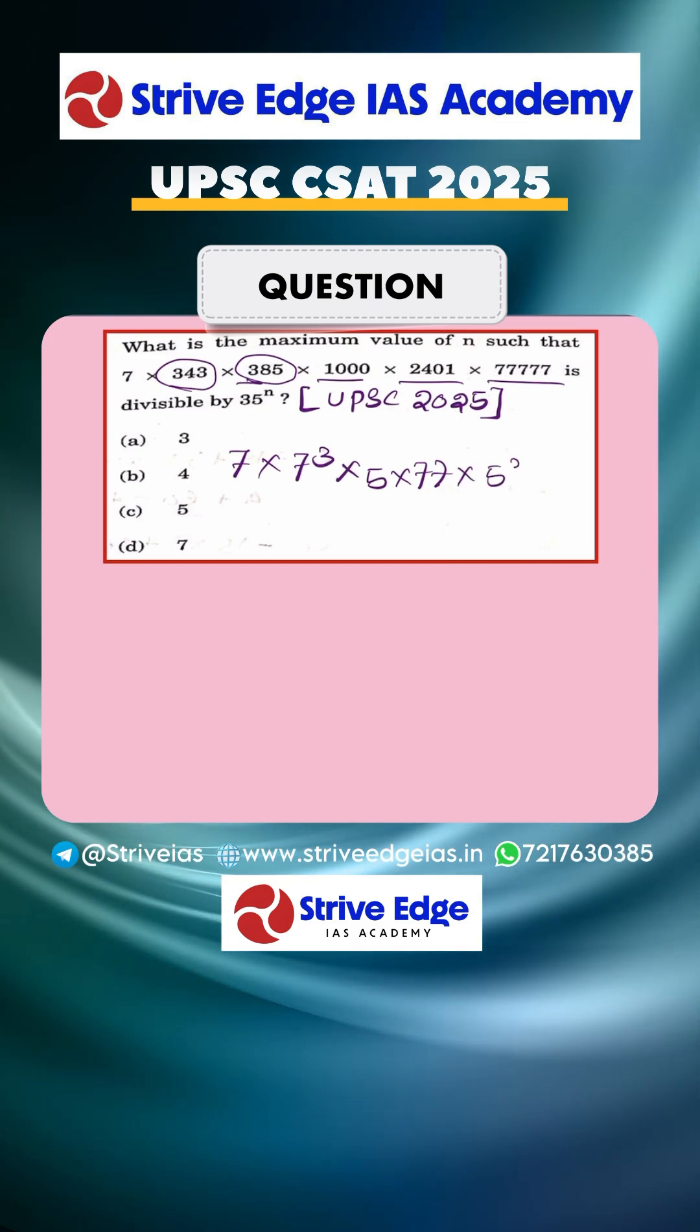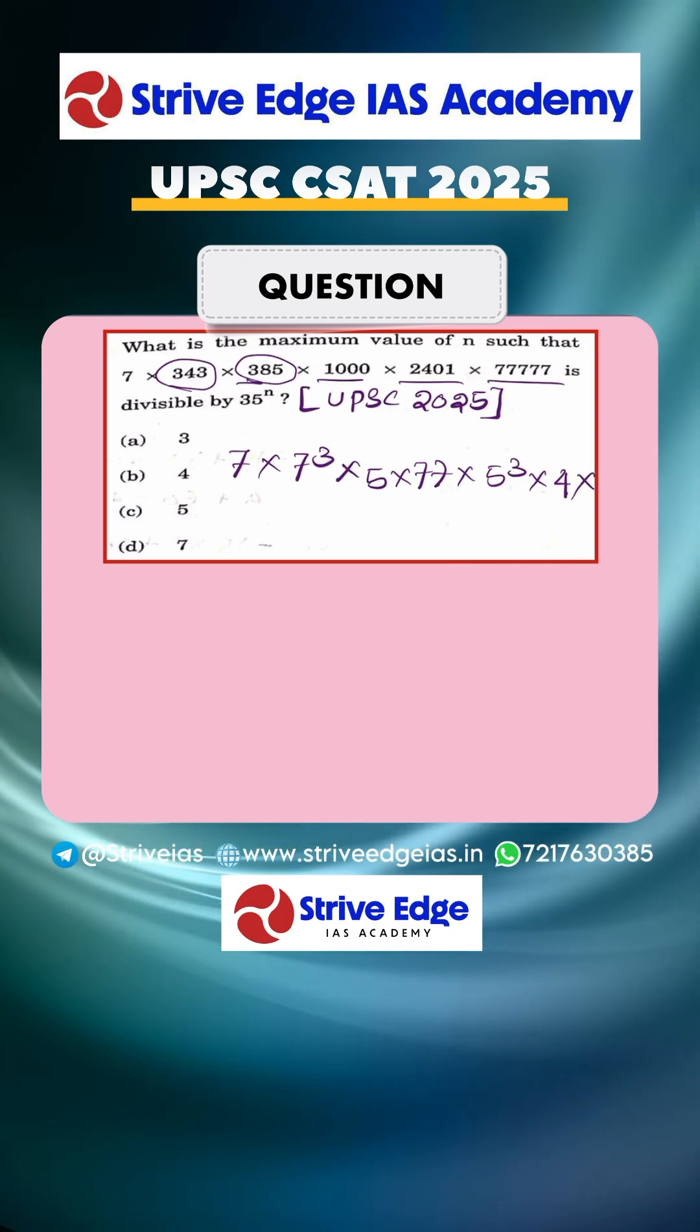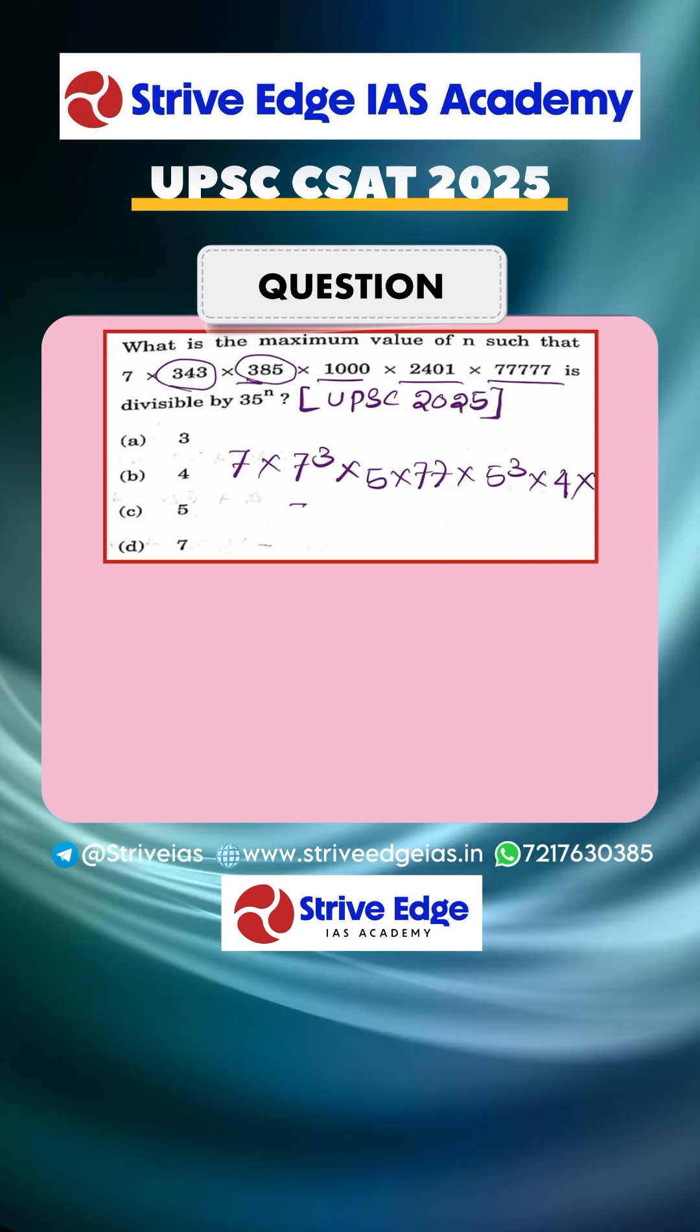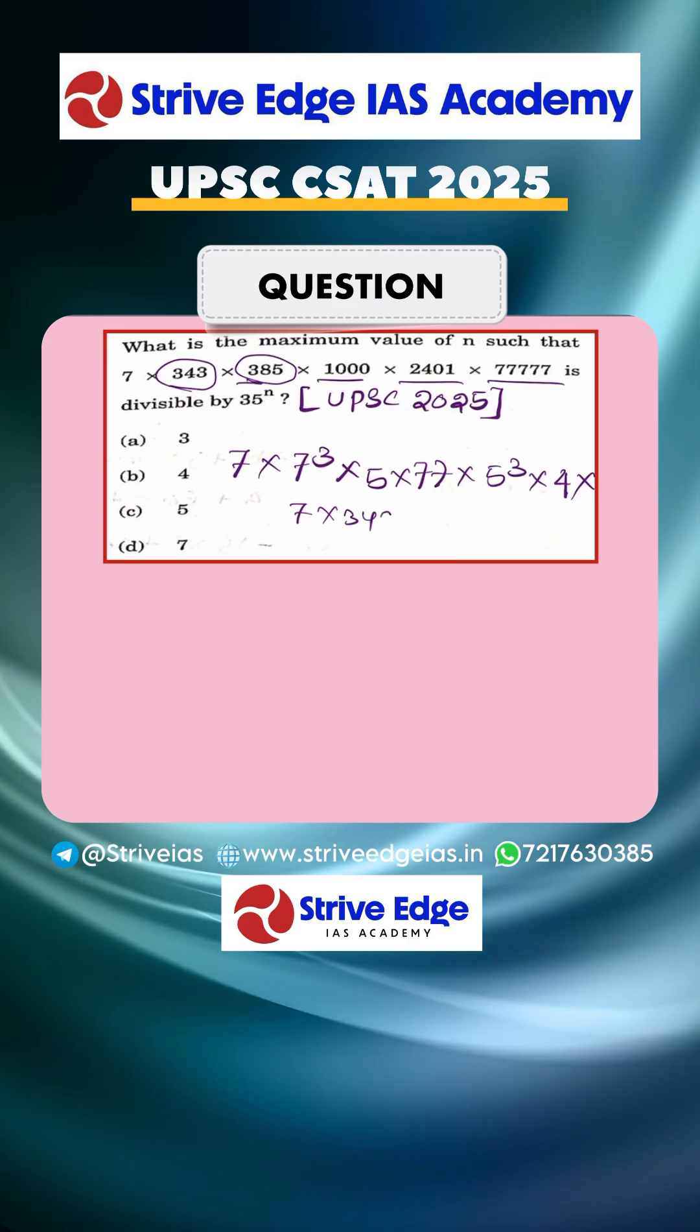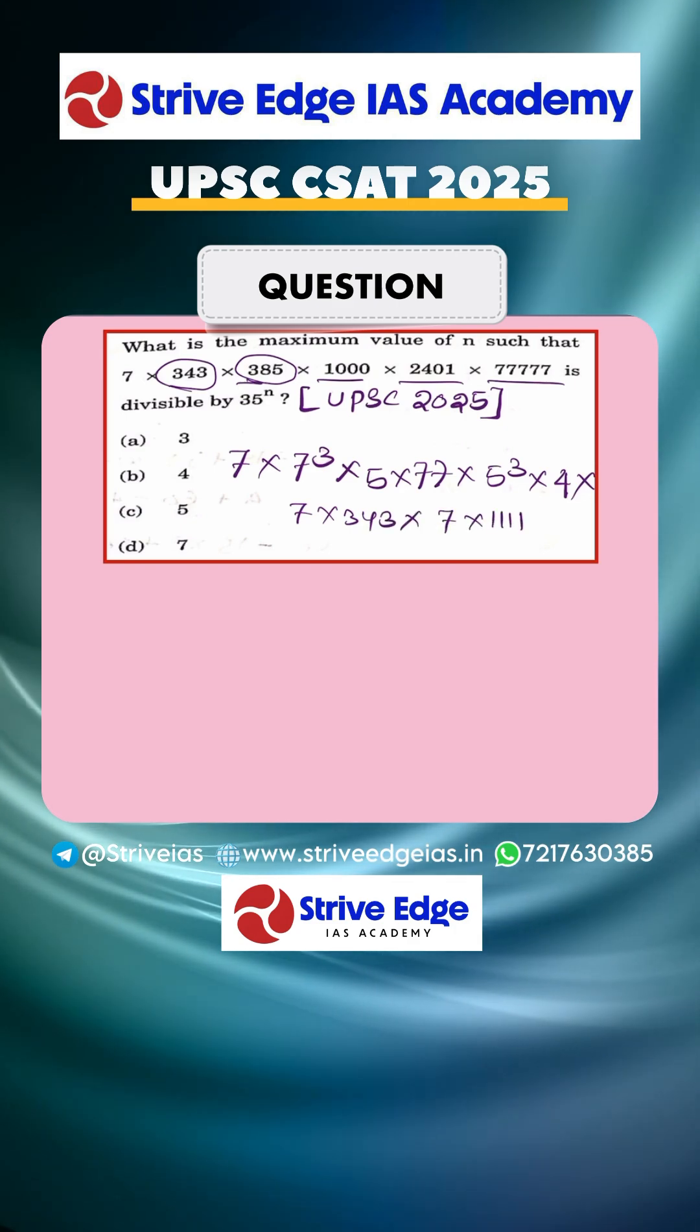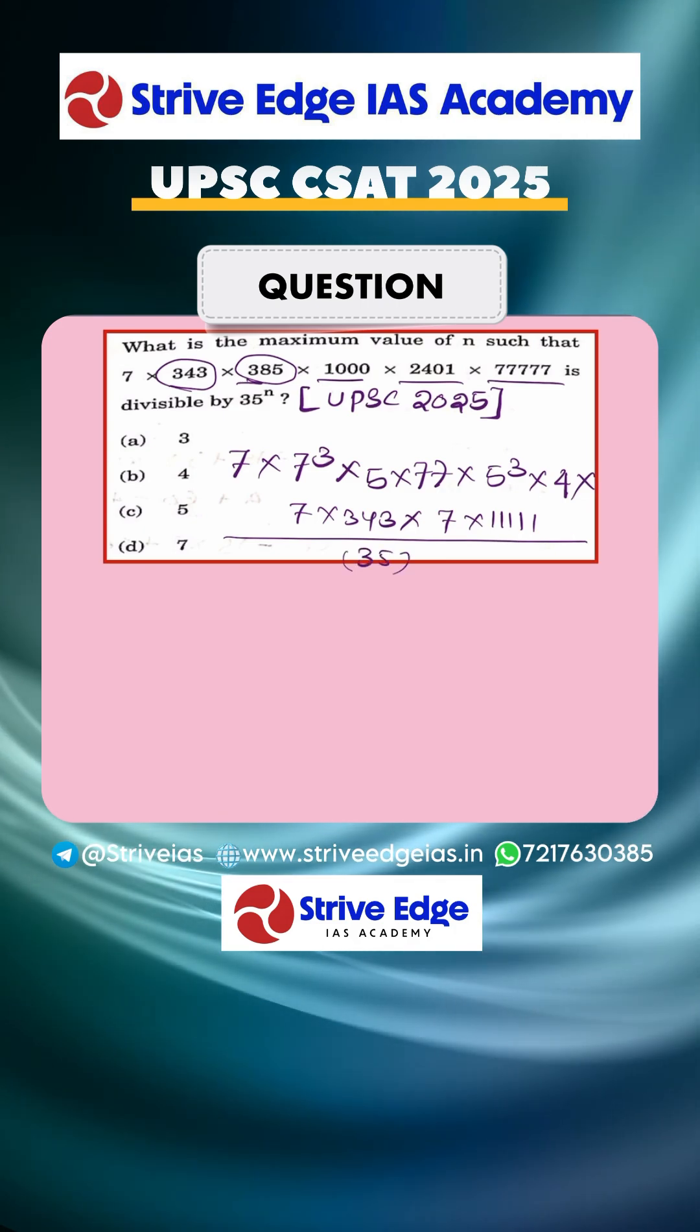I can write 1000 equals 5 to the power 3, that is 125 × 8. Now I can write 2401 as 7 × 343, and then 7 × 5, divided by 35 to the power n.